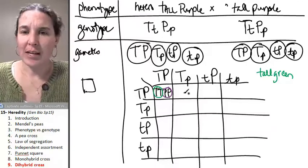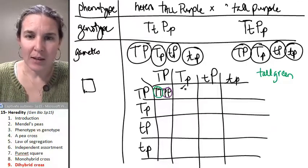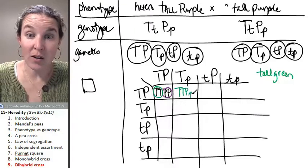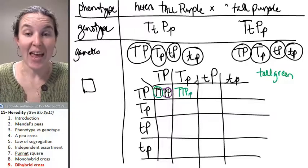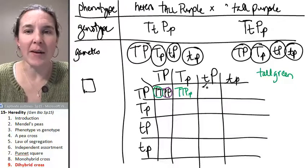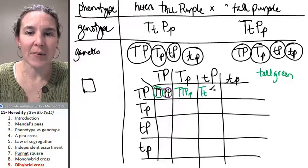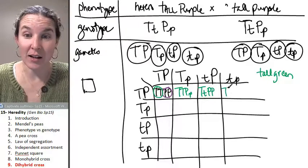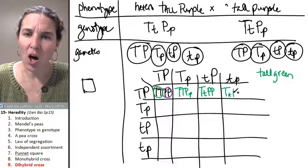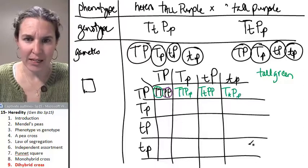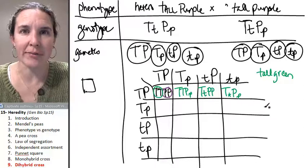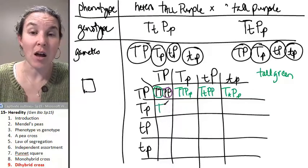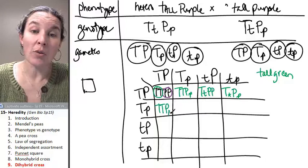And then let's see, what's this guy going to look like? This guy is going to also be tall and green. And so maybe I'll, yeah, I'll just do it this way. What's this guy going to look like? Tall green. What's this guy going to look like? Tall green. All of those are tall green. Let's see if we can go until we find something that's not tall green.